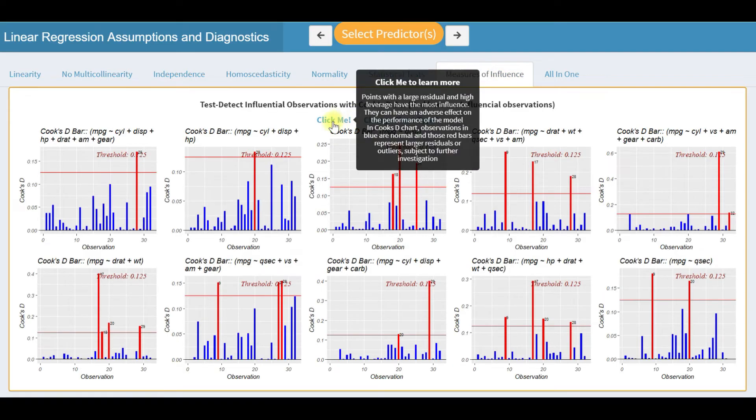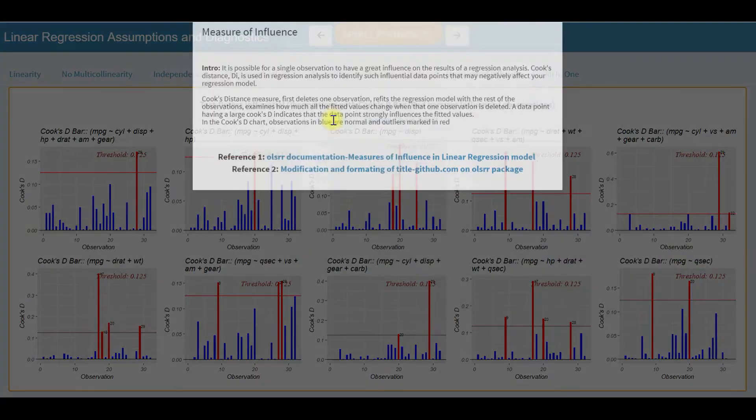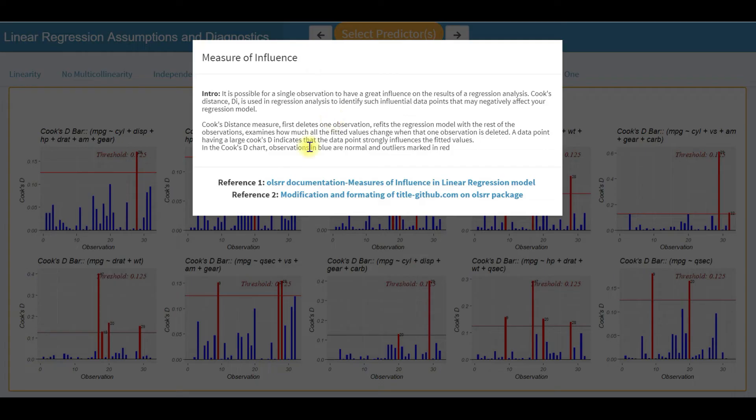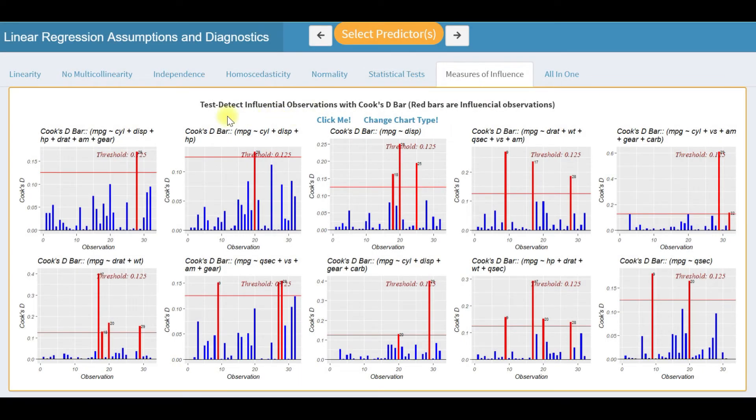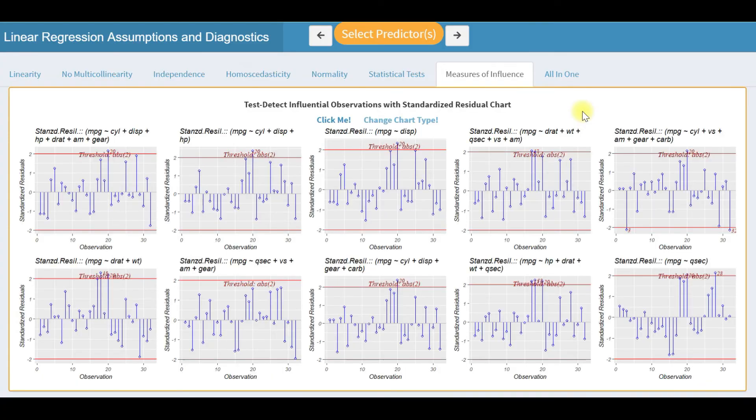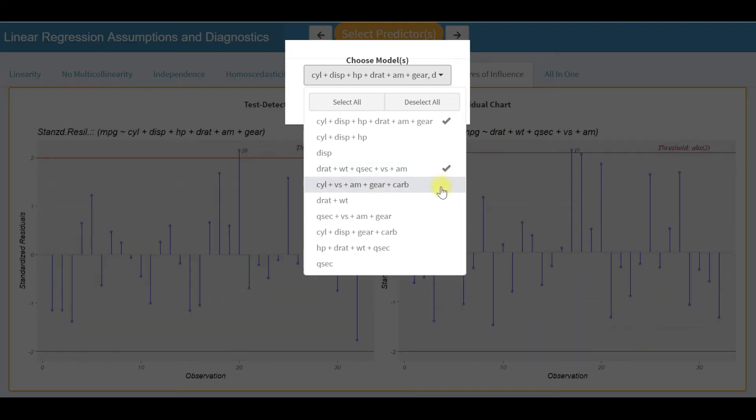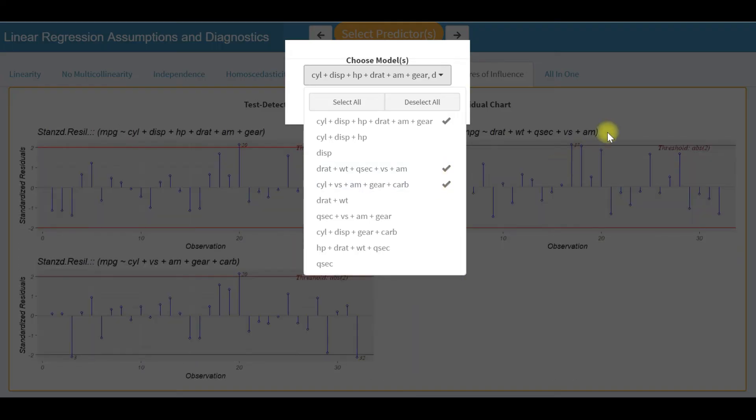It is possible for a single observation to have a great influence on the results of a regression analysis. Here we do measure of influence using Cook's D bar chart and standardized residual chart. Click change chart type button to play with it. There's another interesting option of selecting few models to have a better view or zoom view of the plots for further insight.